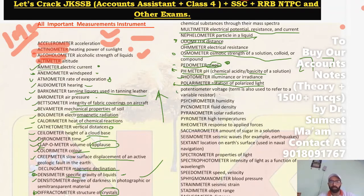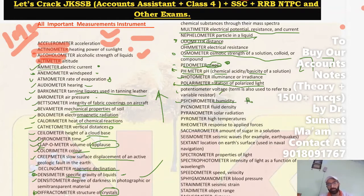Next, Polarimeter is used to measure the rotation of polarized light. Next, Potentiometer is used to measure voltage. Next, Psychrometer is used to measure humidity. Note that there are different instruments used to measure the same quantity — for example, humidity is measured by both Hygrometer and Psychrometer.